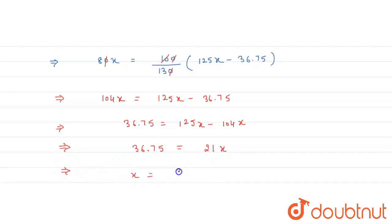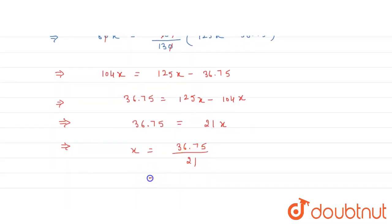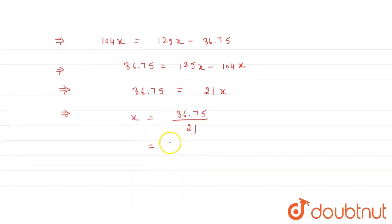So x is equal to 36.75 upon 21. And if we simplify, we get x is equal to 1.75.